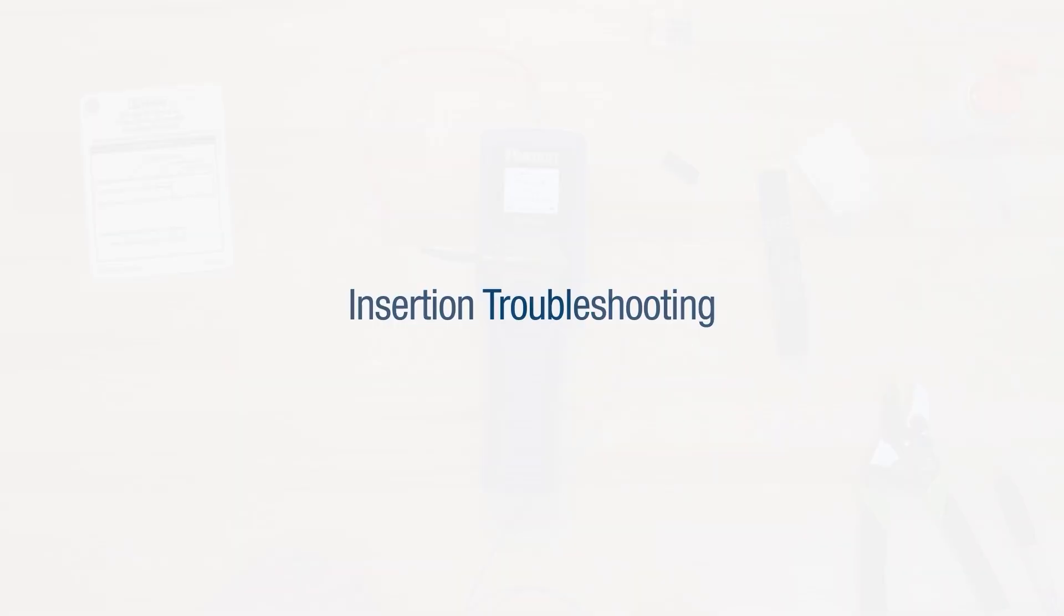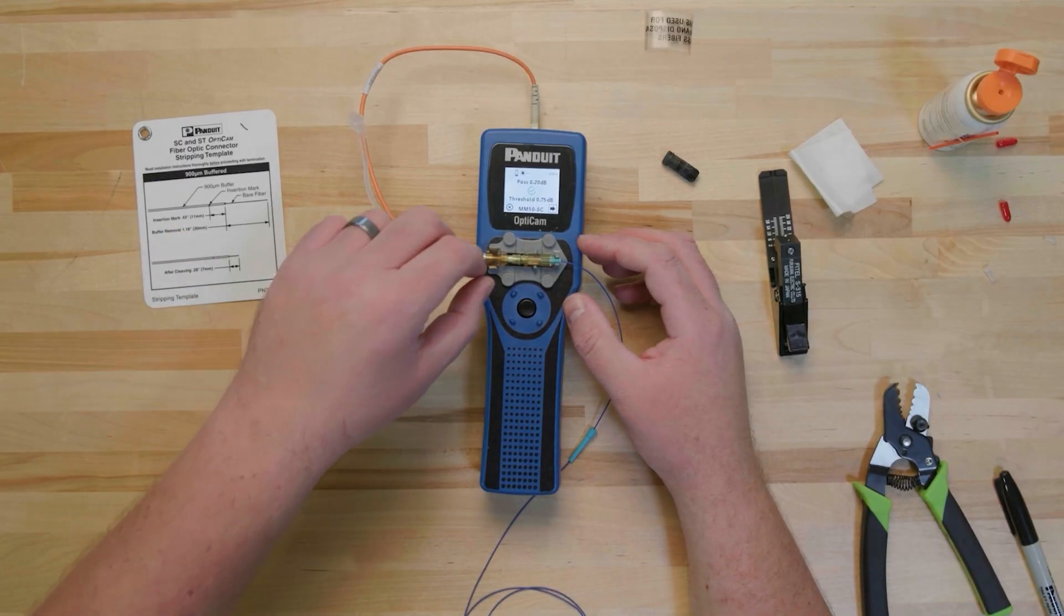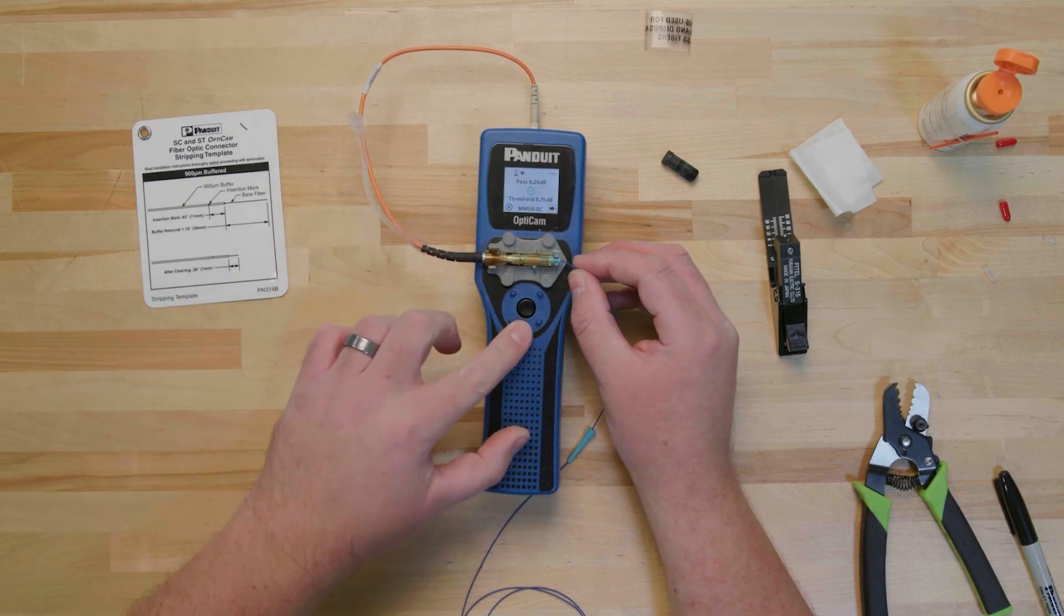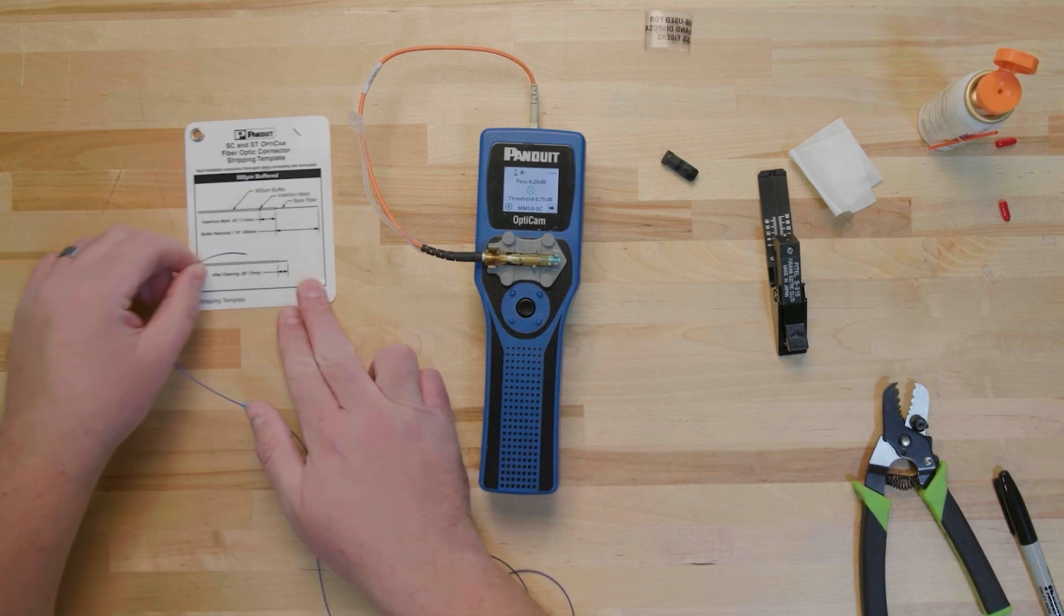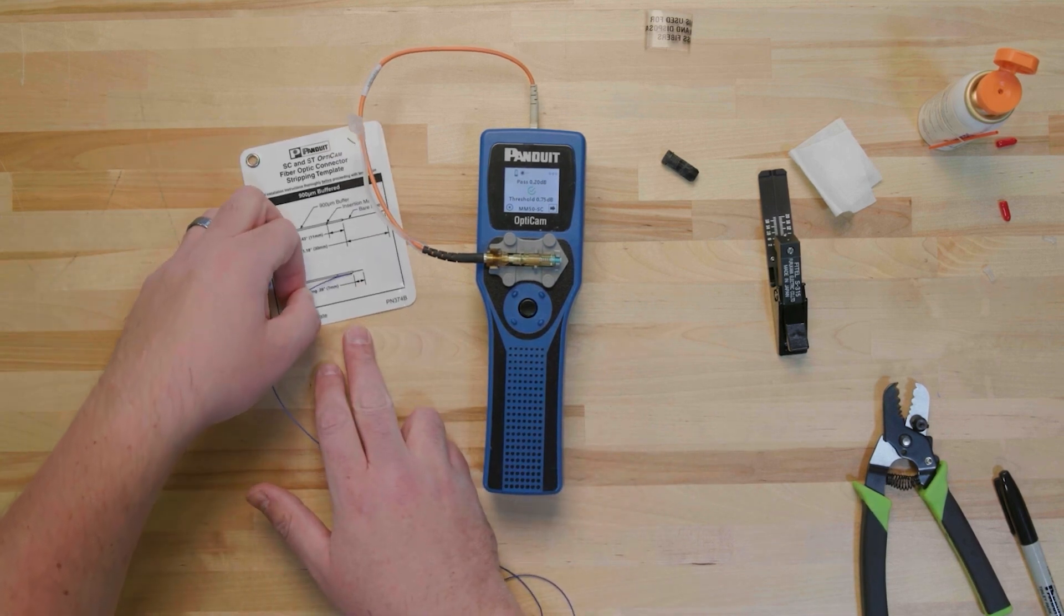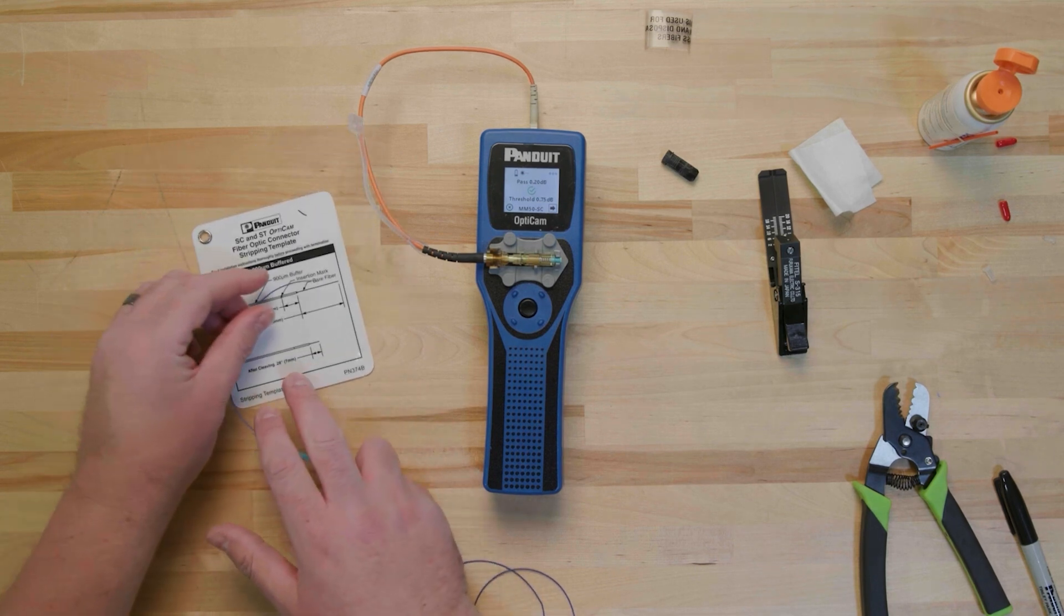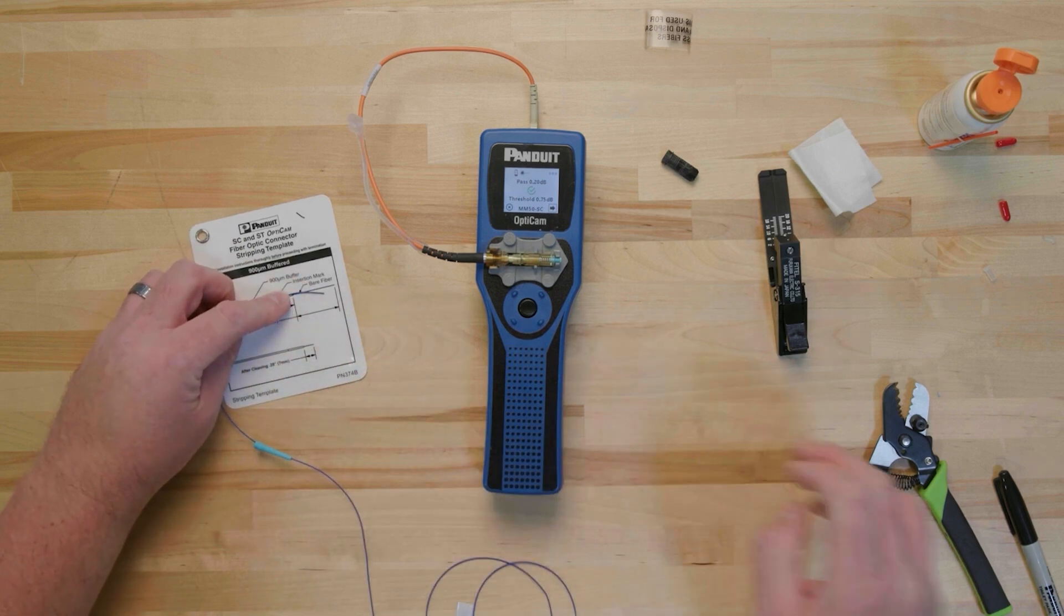If the connector fails, uncam the connector by reversing the cam fin and removing the fiber from the connector. Using the strip template, verify the fiber is still 7 mm long. If the fiber is not 7 mm long, the fiber may have broken off into the connector, and a new connector must be used. If the fiber is still 7 mm long, the fiber end may have been compromised.